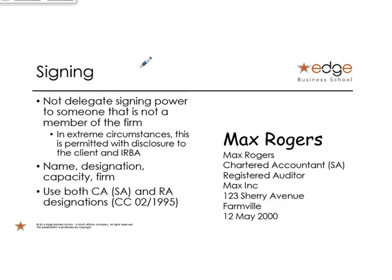Signing — you're not allowed to sign on behalf of someone else. However, life happens and you may have to unexpectedly go away. You are allowed to delegate your signing, but only to someone in your firm. If you're a sole proprietor, you have to speak to IRBA and they will allocate someone to sign for you in extreme circumstances. One of the rules of improper conduct says you can't just leave your responsibilities, but if there's an emergency, you can delegate.